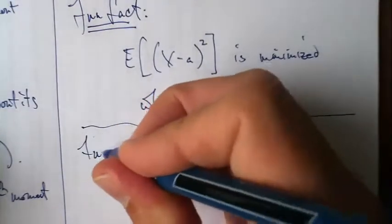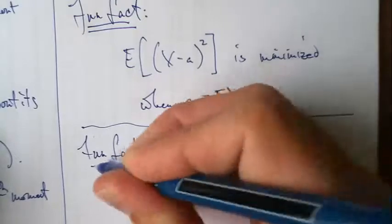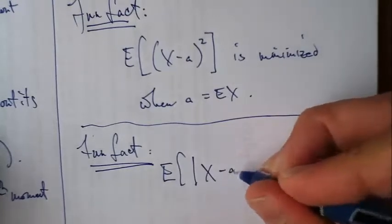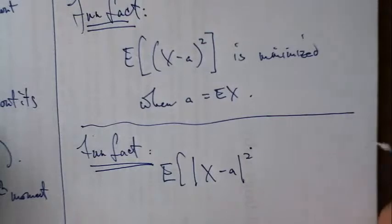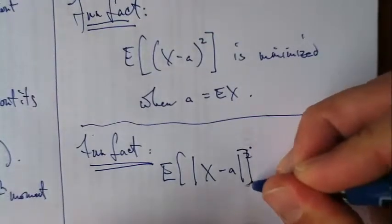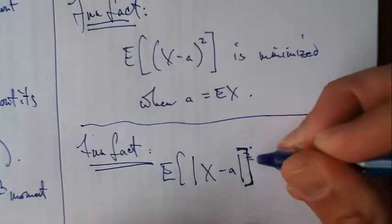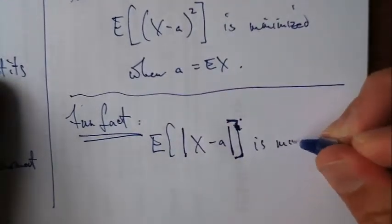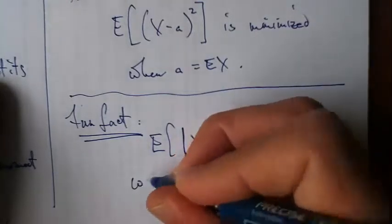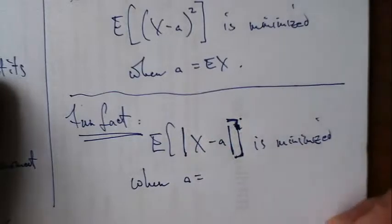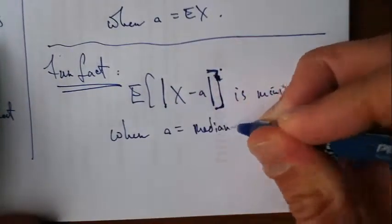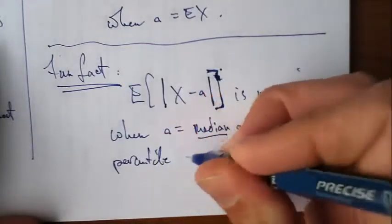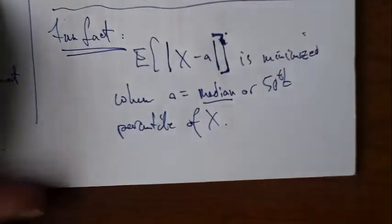Here's a related fun fact, this one I bet you can also prove. You can prove the quantity, the expected value of X minus a, just X minus a in absolute value like that, no squaring there, just absolute value. This guy is minimized when, guess what, a equals the median or 50th percentile of X. I mean you can try to prove that.